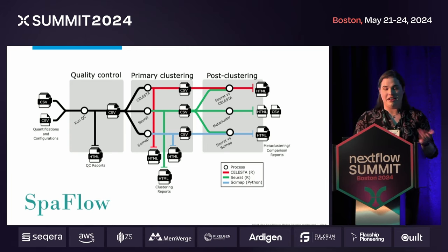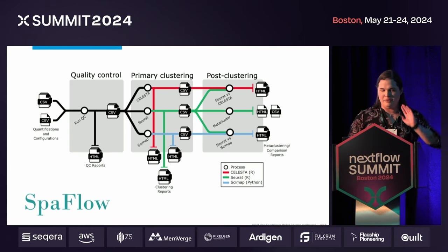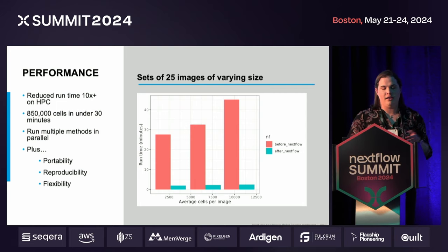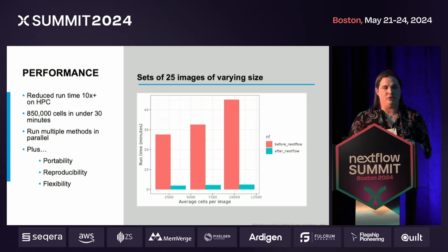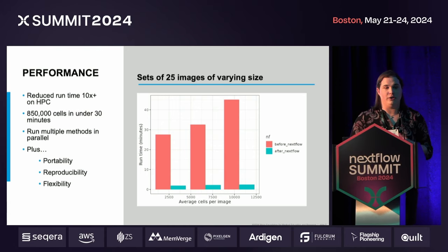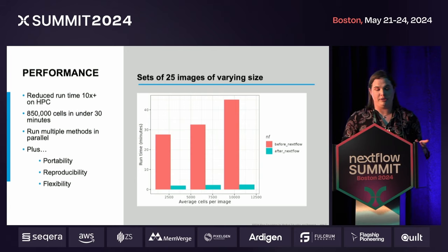This has really sped up and allowed us to scale up — it's been a big success. Through the power of parallelization and automation, we've reduced our runtime on our HPC cluster by over a factor of 10. We've run datasets of up to 850,000 cells in under 30 minutes. We can run multiple methods in parallel without adding any additional work or runtime. And we've gained portability, reproducibility, and flexibility in our work.